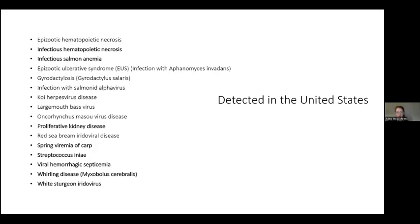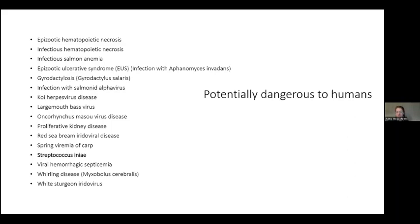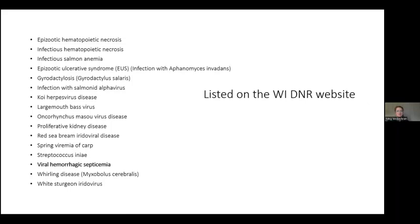There are a few pathogens of fish known to potentially infect humans — that's one reason a pathogen might appear on that list. Of all these listed on the regulatory list, only one — viral hemorrhagic septicemia virus — is listed on the Wisconsin DNR website. When you're thinking about what pathogens to be concerned about as an AIS manager, I wouldn't necessarily start with the regulatory lists. The point is just to illustrate that regulatory lists are made for very different priorities than what you might be dealing with.